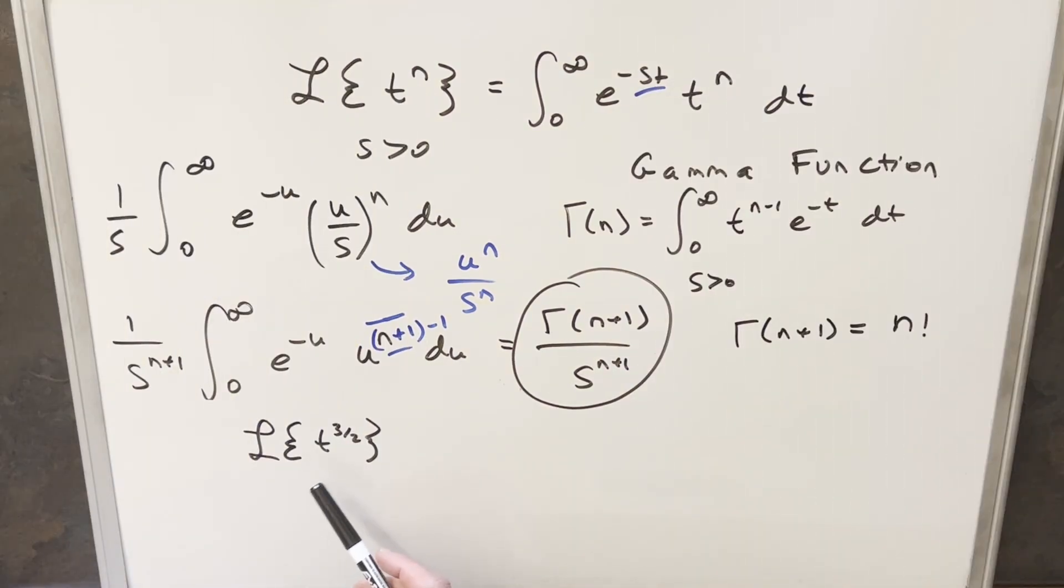Okay, now before we finish up, I thought I would just do a non-integer example. So now we want to find the Laplace transform of t to the 3 halves. So again, using this formula right here, we can write this as gamma of 5 over 2 over s to the 5 over 2.